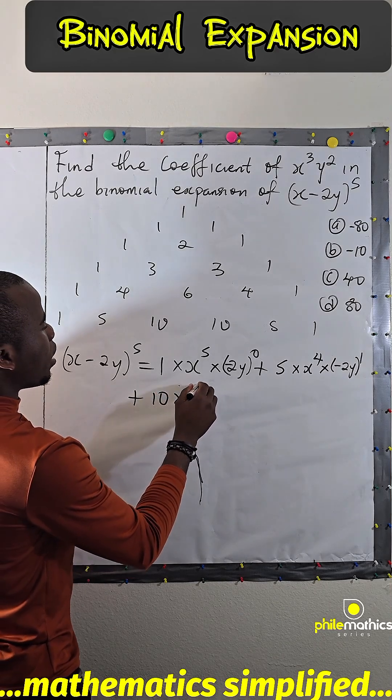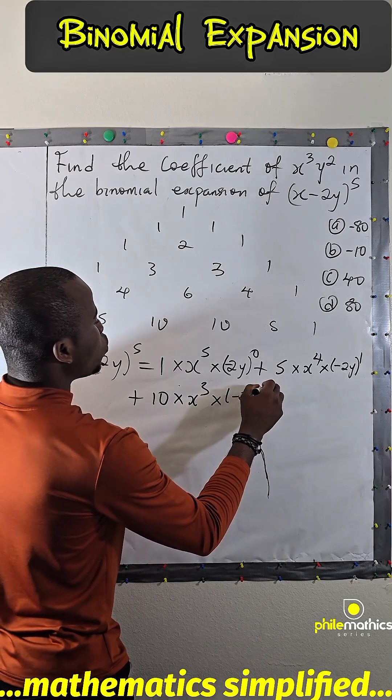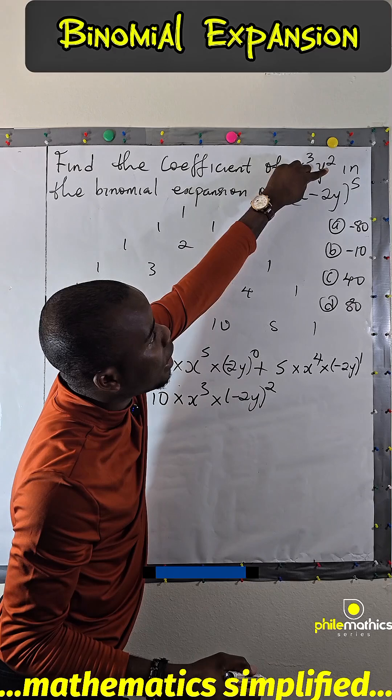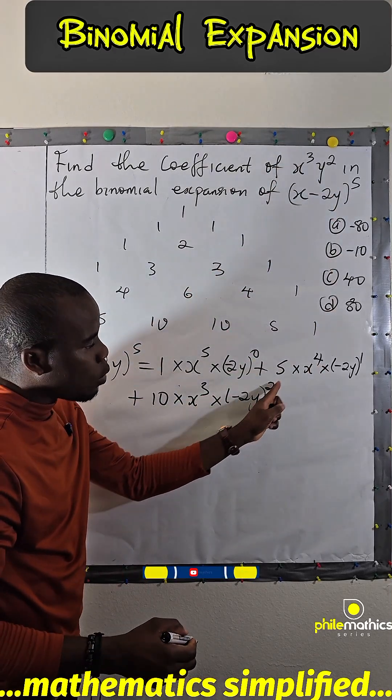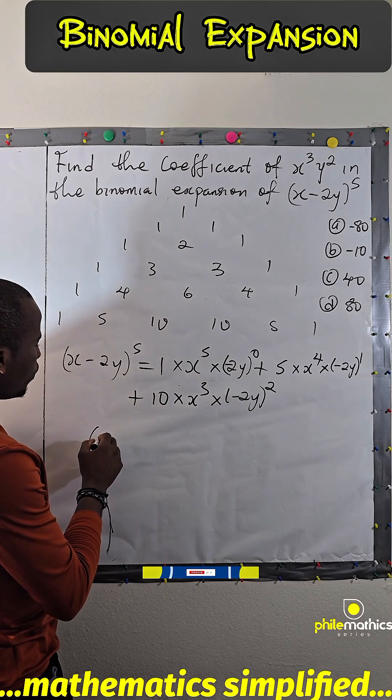If you check, this is where we will get x to power 3 and y to power 2, because x³ and y² will come out from here. So the coefficient will simply be...